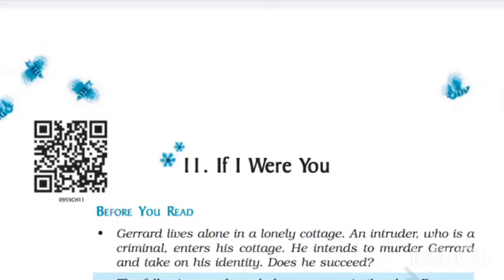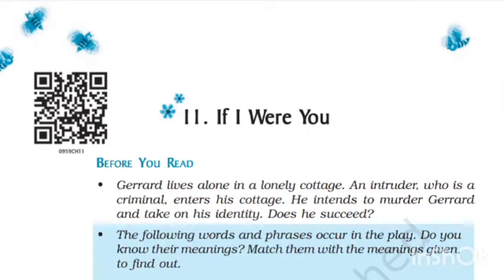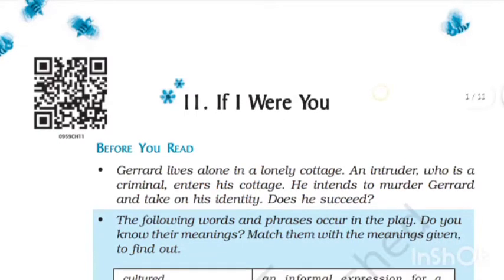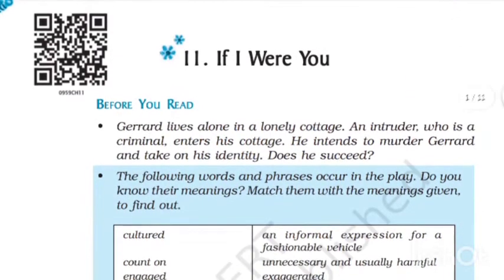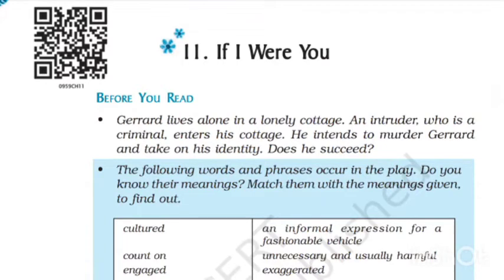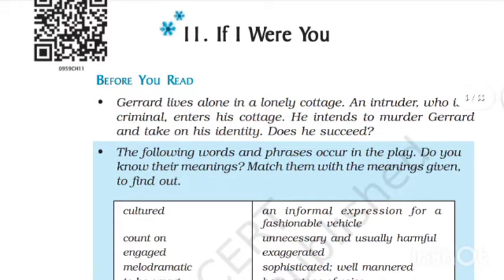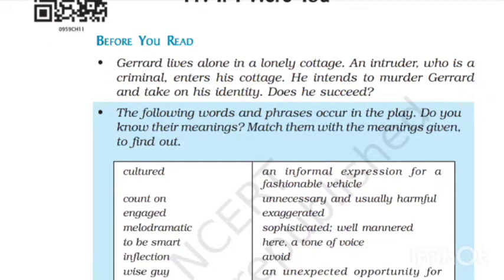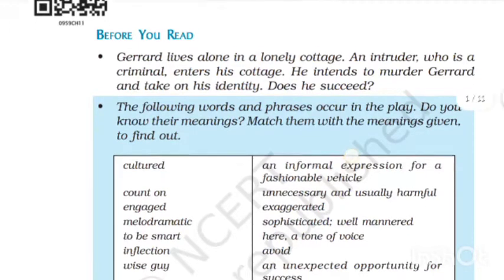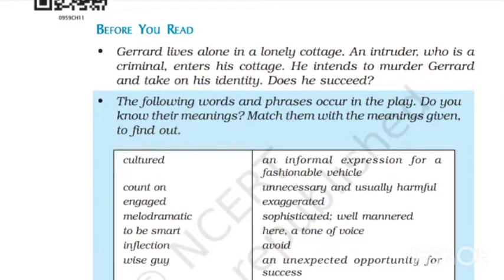Welcome back to the English online classes. In today's class we are going to see the last chapter of the book. Before you read, we shall know the introduction of the story. There is a character Gerard in the story. Gerard is in a cottage, and an intruder — someone who comes without permission — comes into the cottage. His intention is to murder Gerard and take his identity.